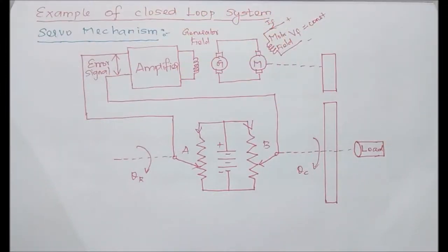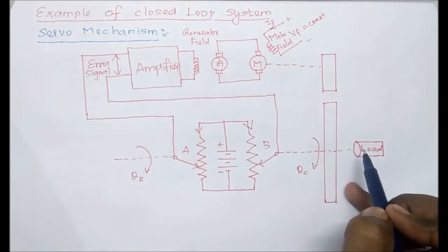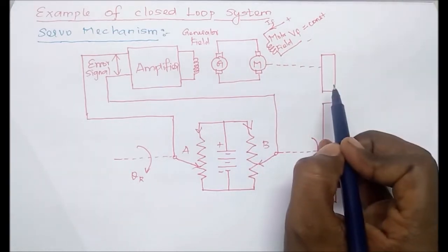In this video we are going to see an example of a closed-loop system. This is a servo mechanism. There is a load; its shaft is connected with the motor shaft through a gear system.